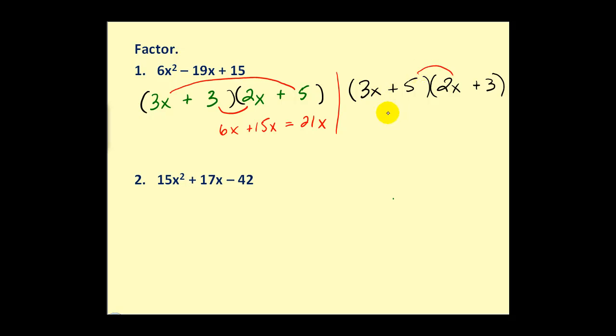Let's check our inner and outer product. Now we have 10x plus 9x which equals 19x. This is actually pretty good. We have a positive 19x, we want a negative 19x, but that's a pretty easy fix.